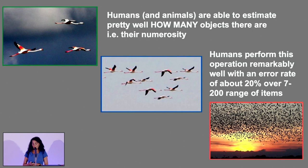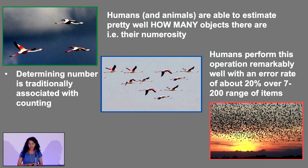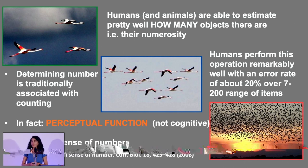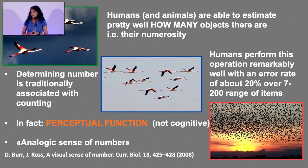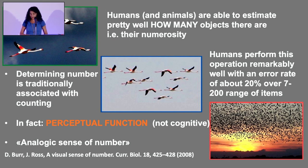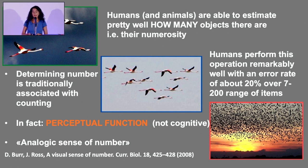Determining a number is usually associated with counting in a cognitive manner — 1, 2, 3, 4, 5. But actually, this is a capacity that is perceptual: we look at the audience and we estimate how many persons are here. This is a kind of analogic sense of number, and it is difficult to account for using artificial neural networks.